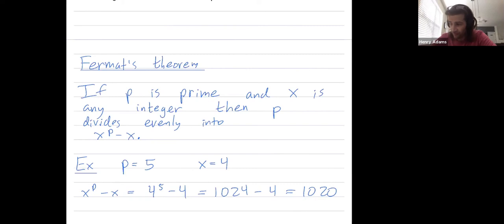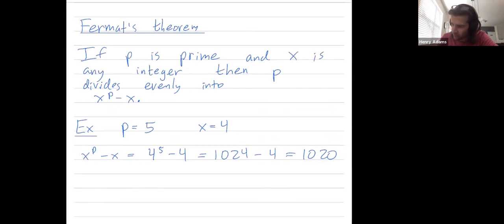Let's try that same P, but let's take X to be 3. So X to the P minus X is 3 to the 5th minus 3. 3 to the 5th should be 81 times 3, so 243. Okay, and 5 divides into 243 minus 3, which is 240.